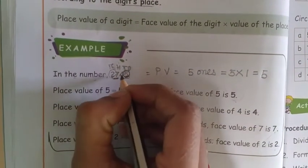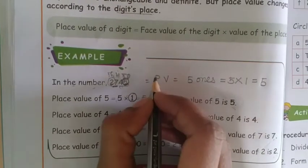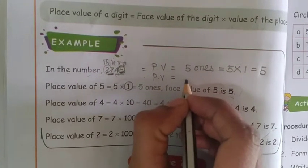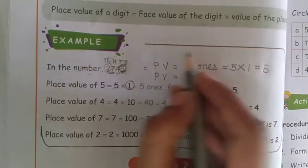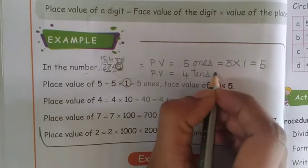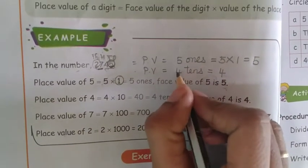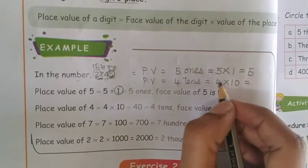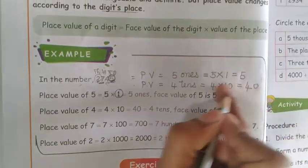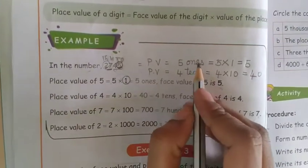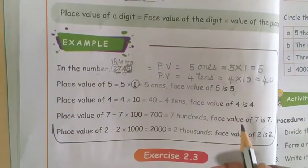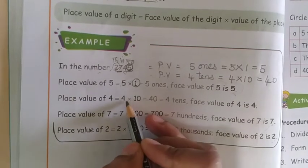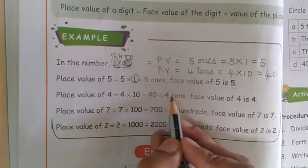Now, we want to find the place value of 4. 4 is sitting in which place? 10's place. So, 4 tens equals 4 multiplied by 10. The number sitting in 10's place means we want to multiply by 10. So, 4 tens are 40. This is the answer. The place value of 4 equals 4 multiplied by 10 equals 40.